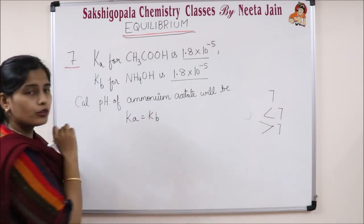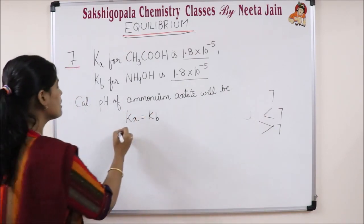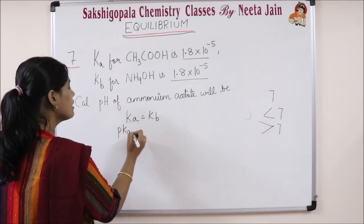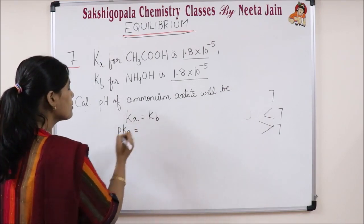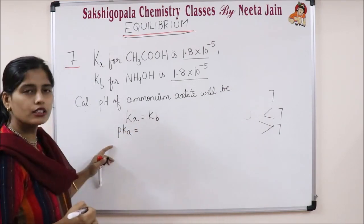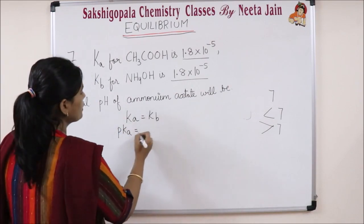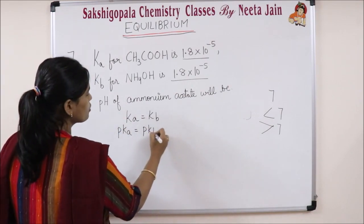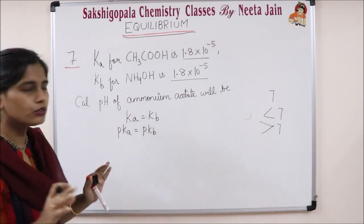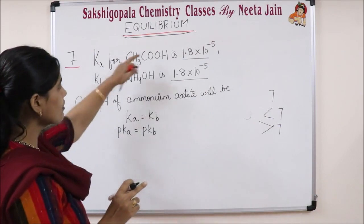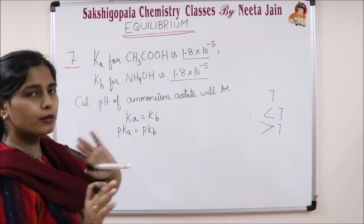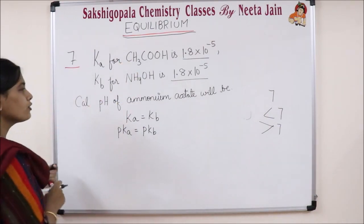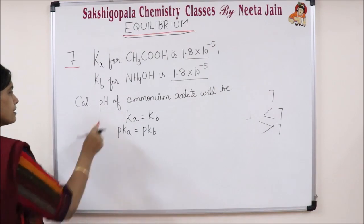When you take a log of both sides, pKa equals pKb. Because Ka and Kb have the same value, their negative logarithms are also equal. The question asks us to calculate the pH of ammonium acetate.